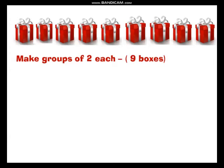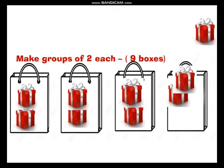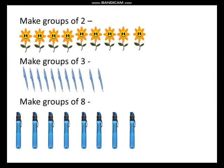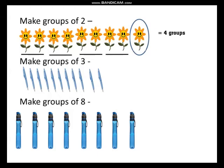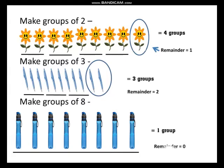Let us take more examples. Here we have nine boxes and we have to make groups of two each. We are able to make four groups of two, but one box is left — that is our remainder. Similarly, with flowers, we make four groups of two each but one flower is left, so remainder is one. In the next example, making groups of three leaves remainder two. When we have eight bottles and make one group of eight, nothing is left, so remainder is zero.